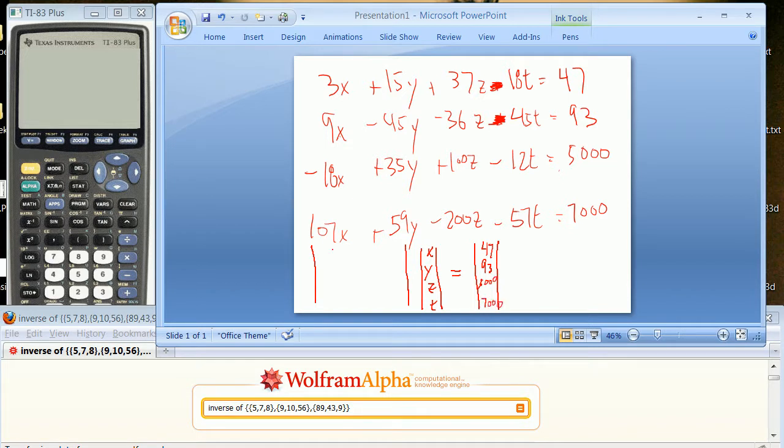And then 3, 15, 37, minus 18. It's a good idea to include those in a parenthesis when you're doing it. 9, minus 45, minus 36, minus 45. I apologize for those of you on an iPhone, this is not going to work. Get a real screen. Minus 18, 35, 100, minus 12, and then finally 107, 59, minus 200, and minus 57.